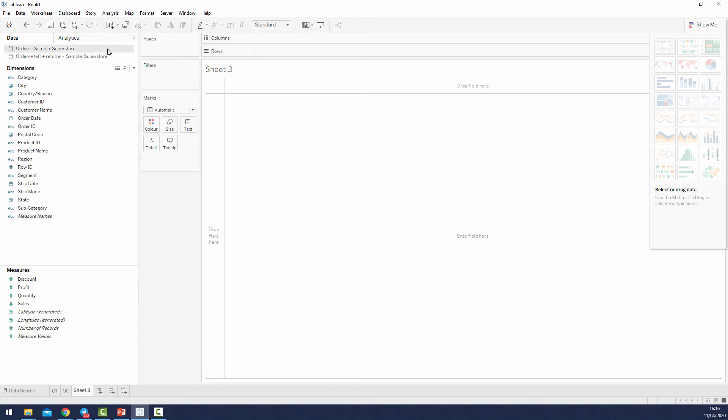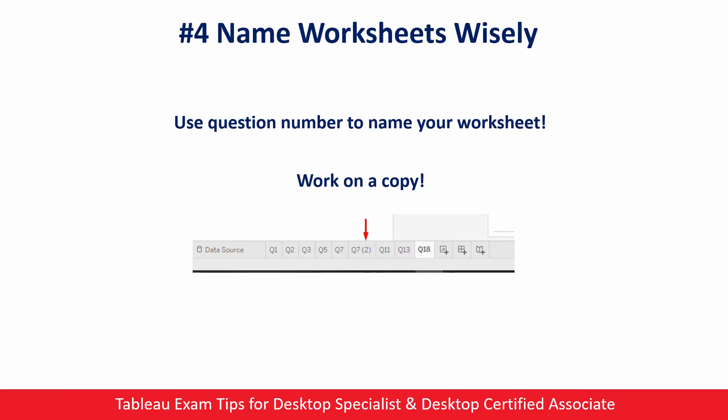Now let's continue with tip number four: name your worksheets wisely and always work on a copy. Whenever you create a new worksheet, it is better to name it by question number — so I suggest using Q1, Q2, Q3, and so on. It takes only two seconds to rename a worksheet. Imagine you are done with the questions and want to check your solutions one more time — with clear worksheet names you won't waste time finding the solution you're looking for. You can quickly jump between solutions and save your time.